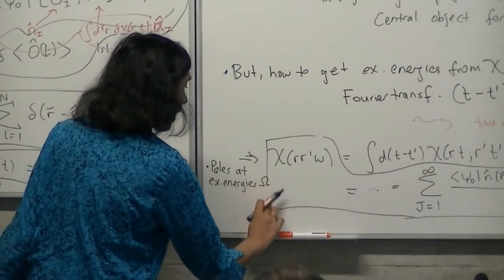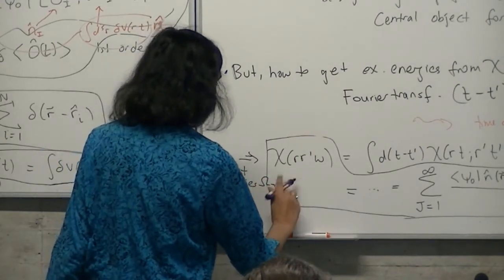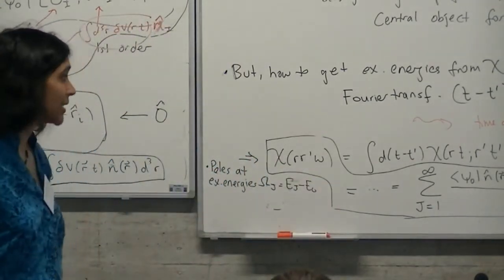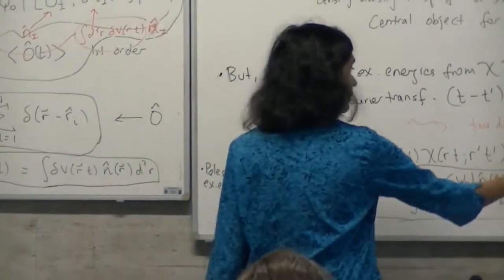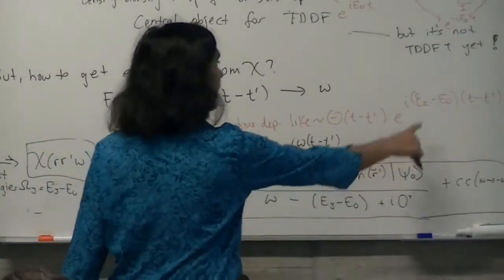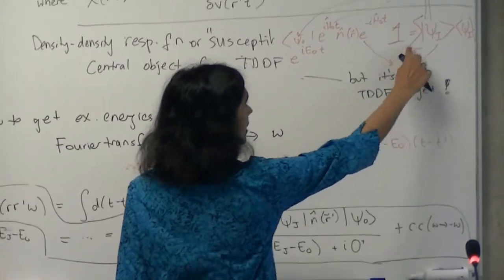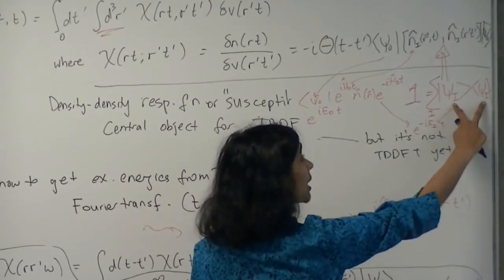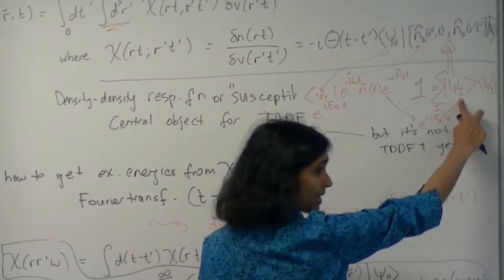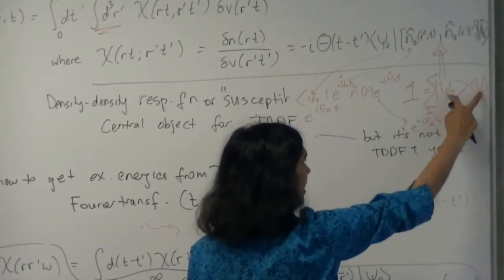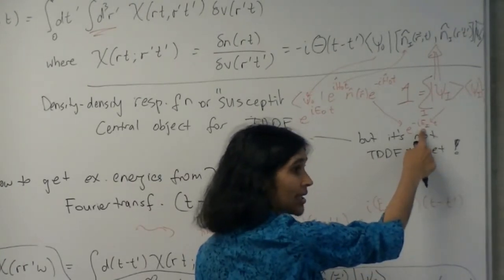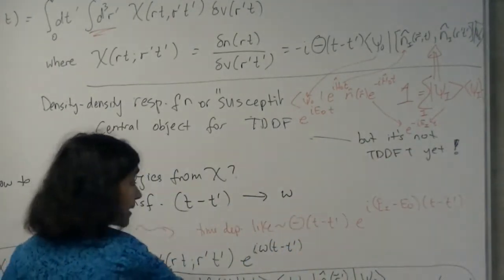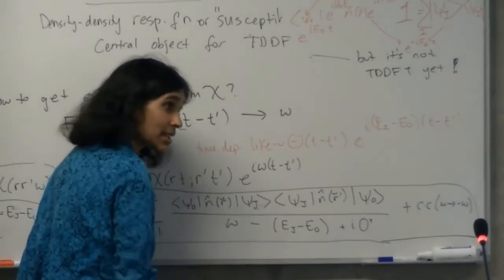This is not TDDFT yet — these are many-body ground state and excited state wave functions and many-body energy differences. For any realistic system you can't calculate these objects. You can see that there are poles at the excitation energies — I could call them capital Omega_J equals E_J minus E₀. The eta which takes the poles slightly below the real axis is required for causality. Also, the residues give you transition strengths — transition dipole moments, transition densities — the strength of the transition.